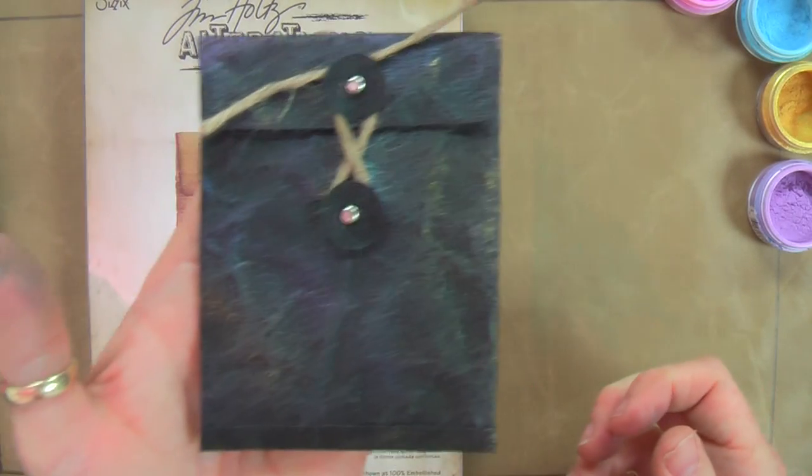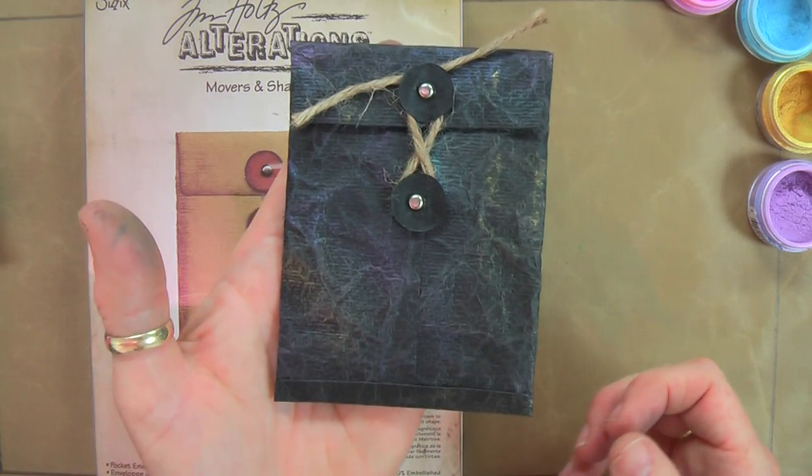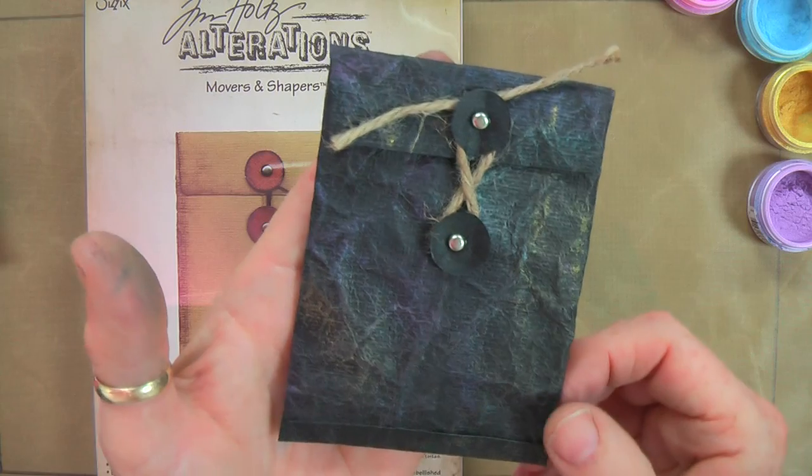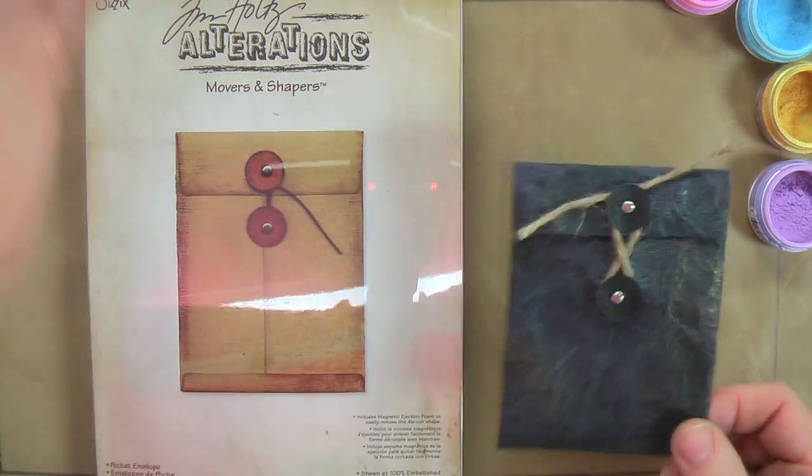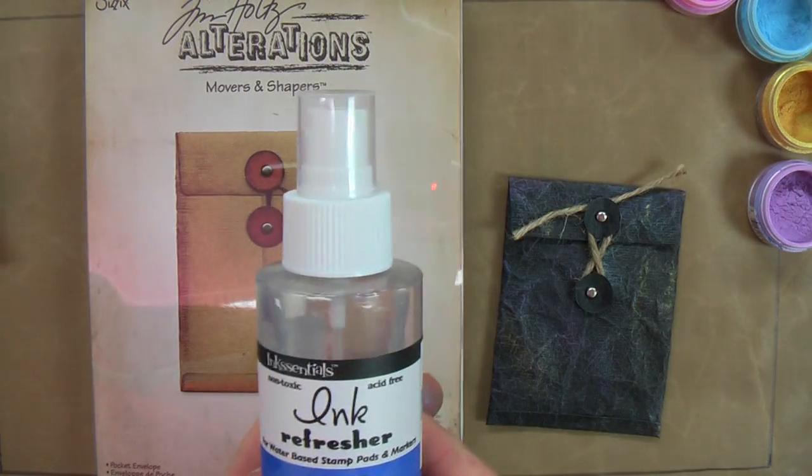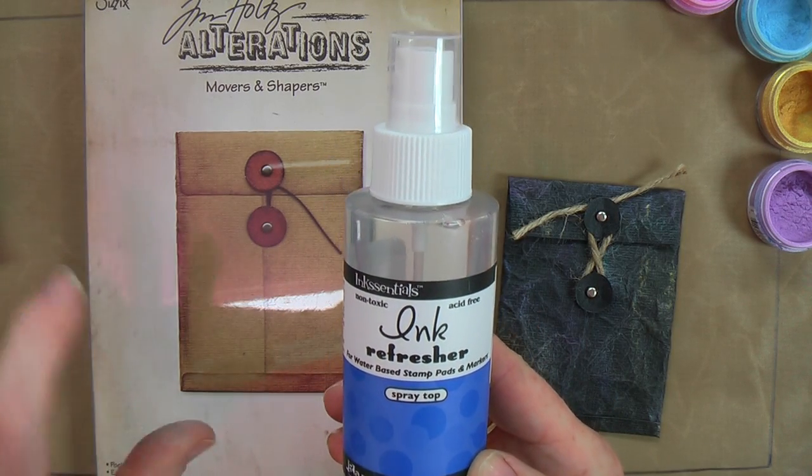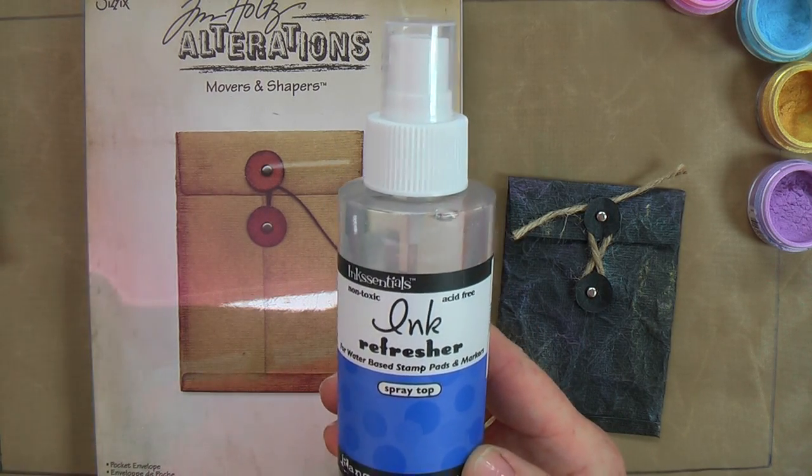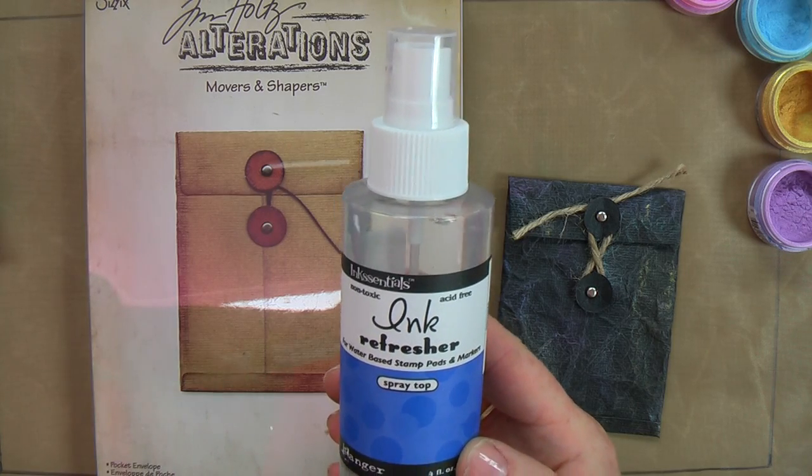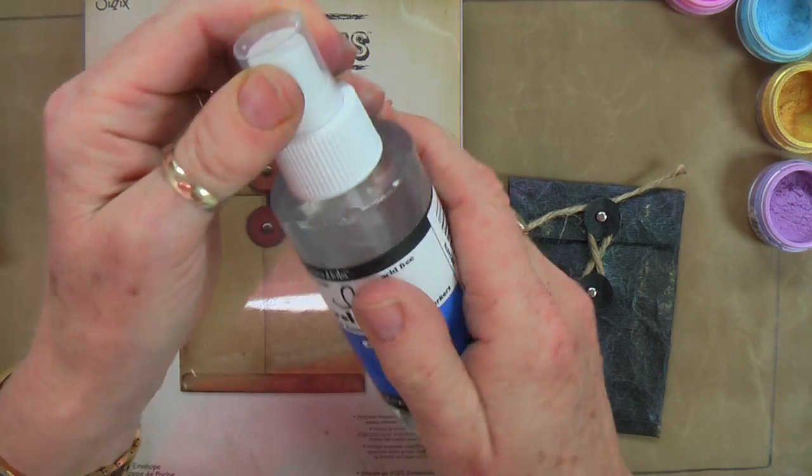So this is what it's going to look like completed and the technique that we're doing is called Faux Suede. So this is done with Perfect Pearls and the Ink Essentials Ink Refresher. This is like a spray that you can spray onto anything water based like your Distress Ink Pads, pens, etc. to refresh them rather than having to re-ink. So I'll just pop that aside.